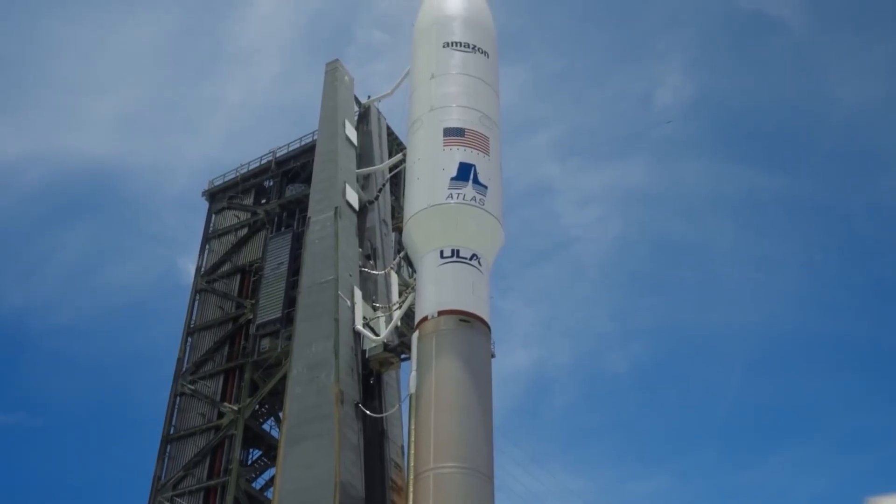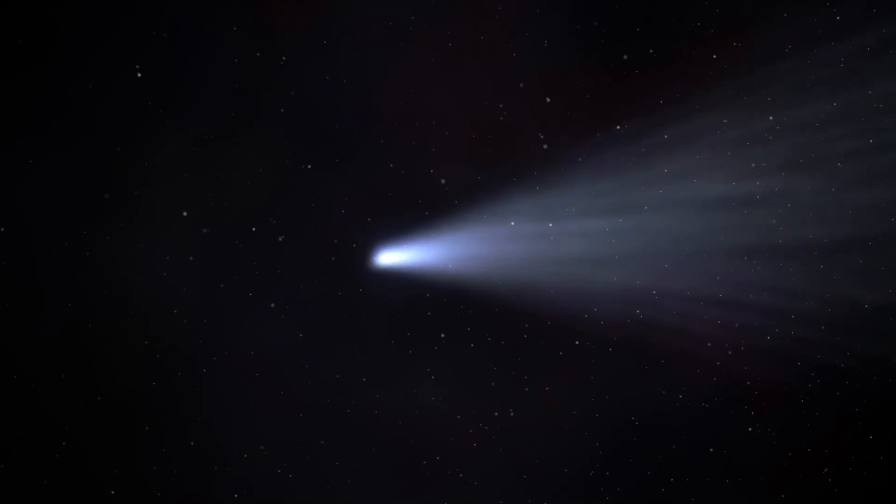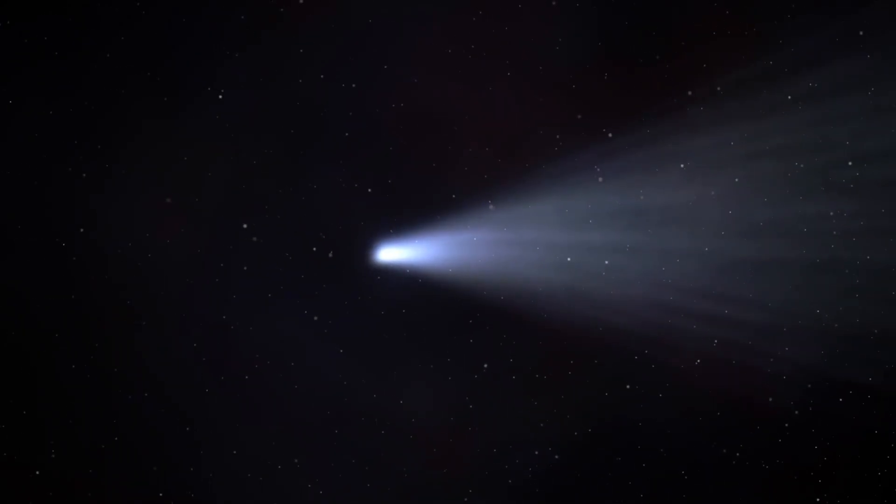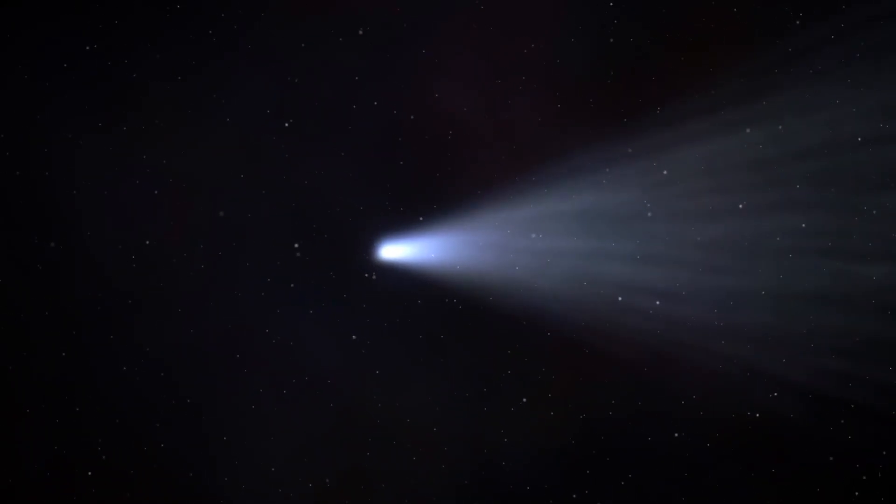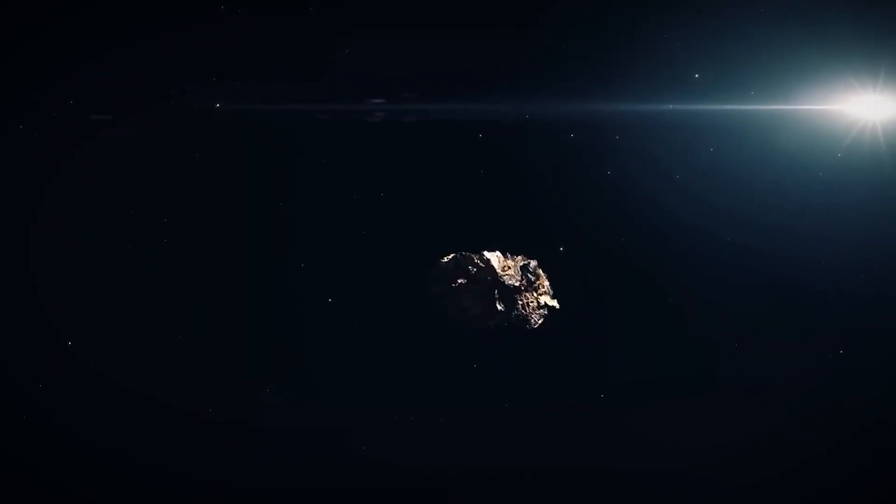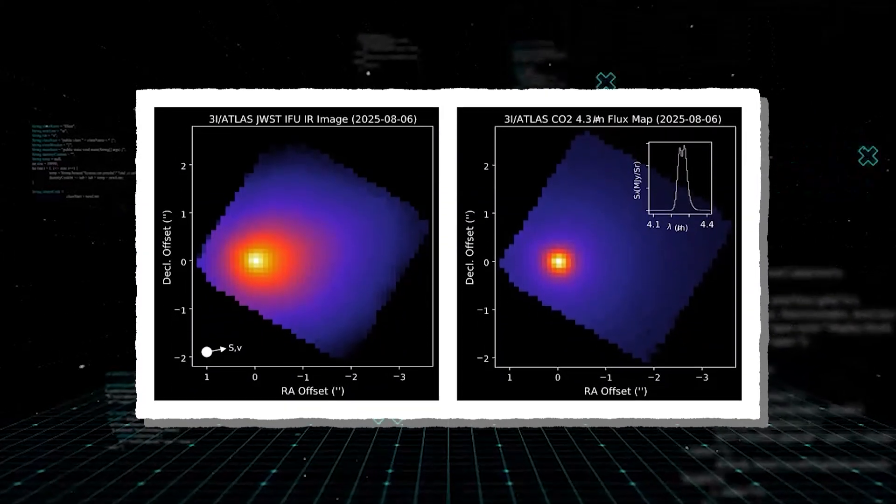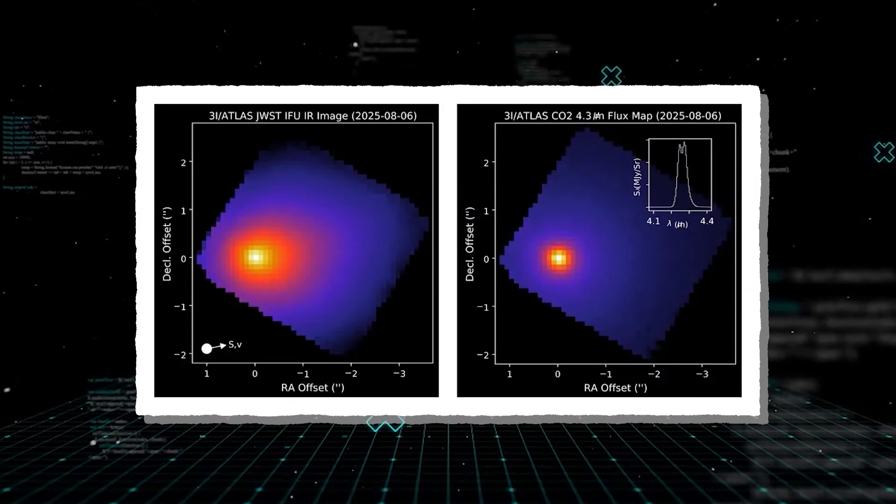But not all things are what they seem. While we focus on our own mess, celestial visitors like 3I Atlas represent an entirely different category of threat, or opportunity. They don't follow our rules, they don't have predictable flight paths within our solar system, and their composition can be vastly different from anything we've studied.